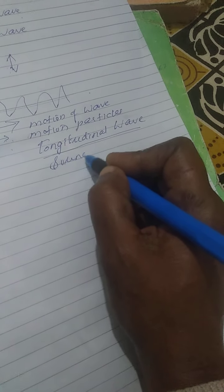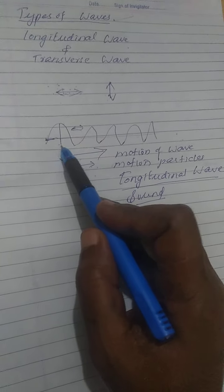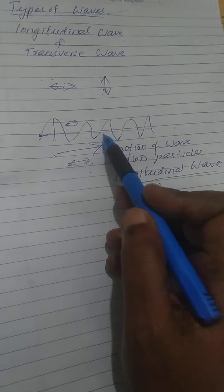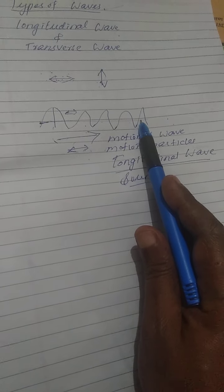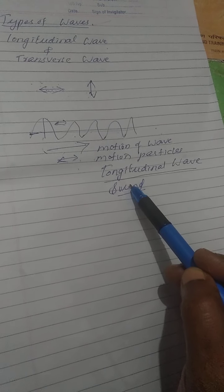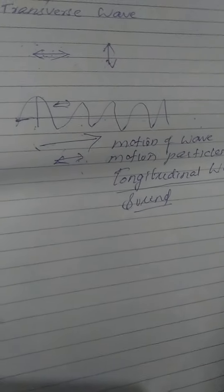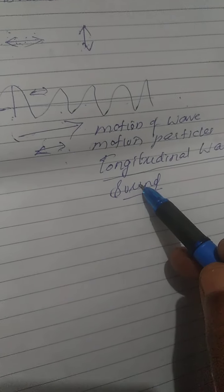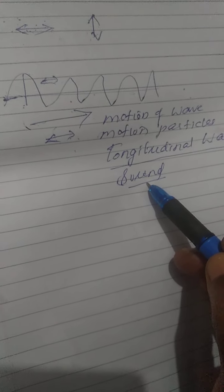Sound wave is a longitudinal wave because the sound waves are moving in one direction and the particles present in the medium also move parallel to the direction of propagation of the wave. So we say that sound waves are known as longitudinal waves.